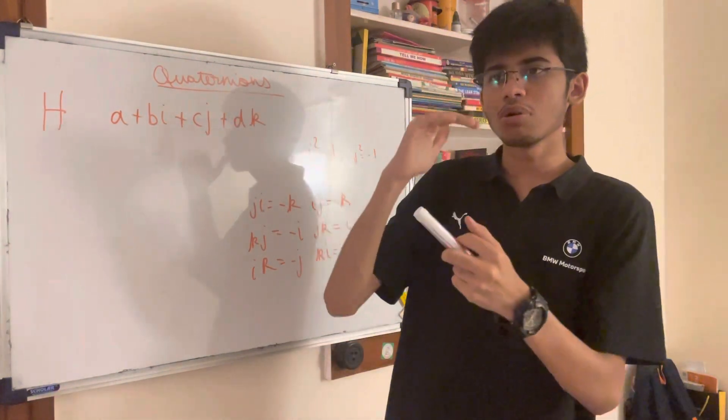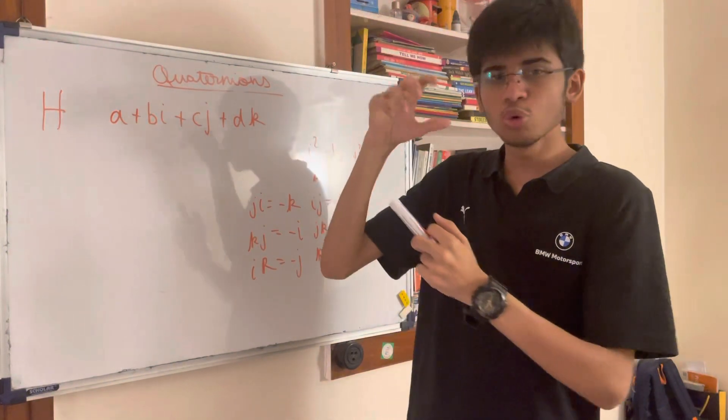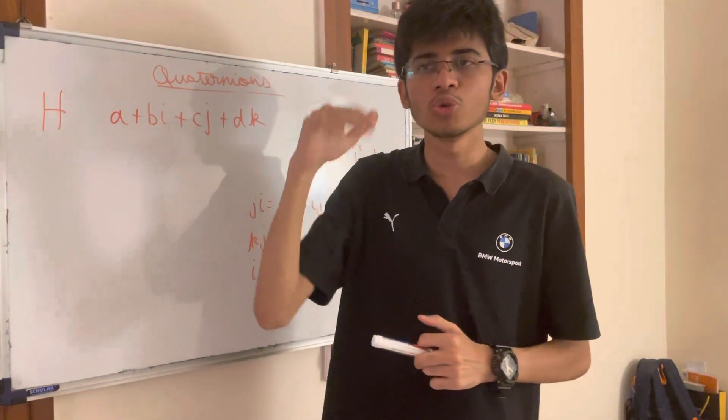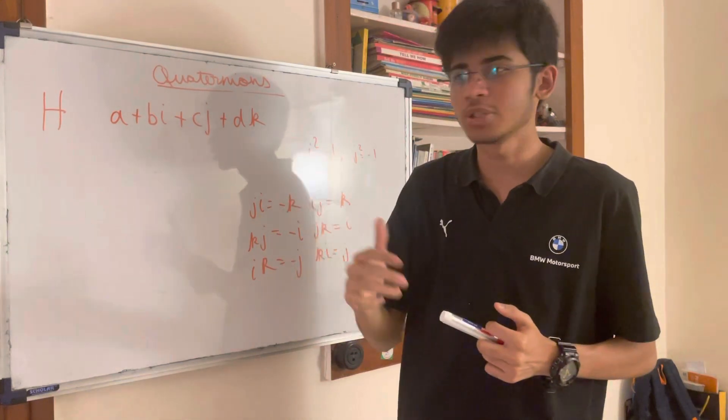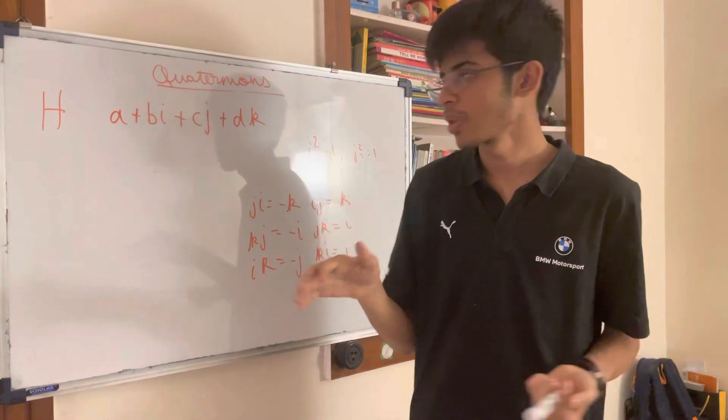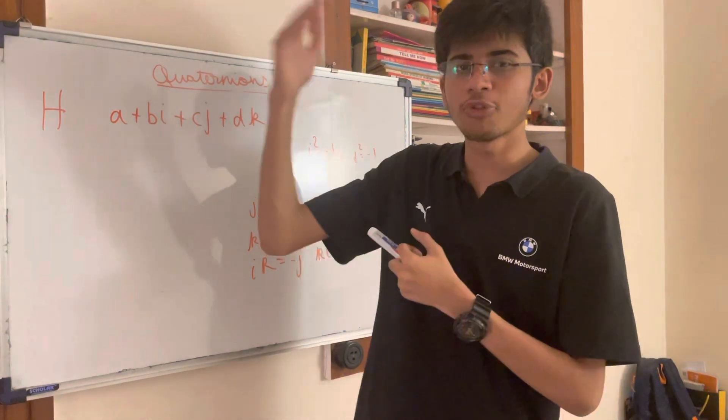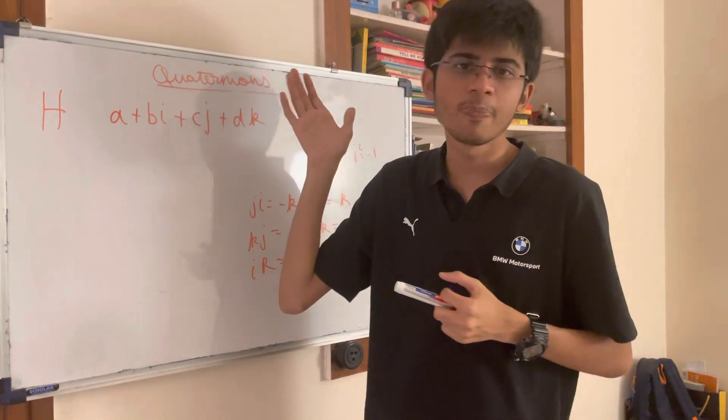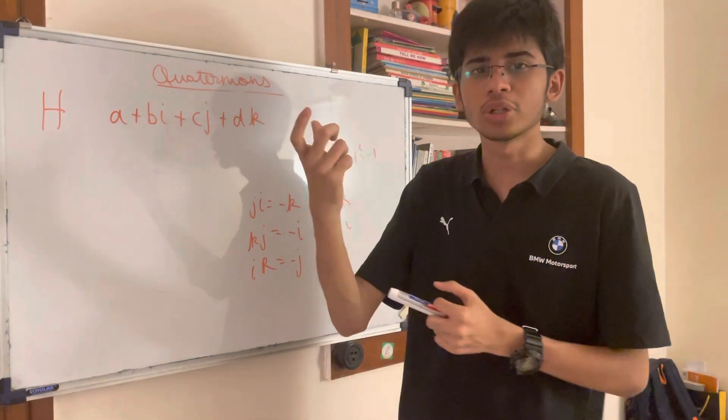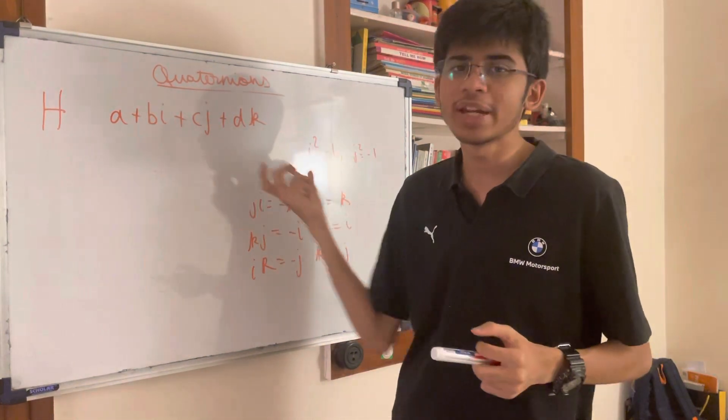Basically, every time you go up a number system, you lose a property of mathematics. From real to complex, you lose the ability to take square roots because it doesn't make sense to take the square root of negative numbers. When you go from 2D to 4D, like we've gone from complex to quaternions, you lose the ability to commute, to have commutativity.